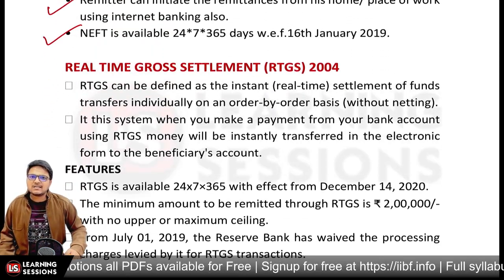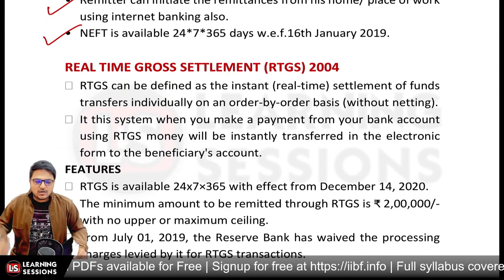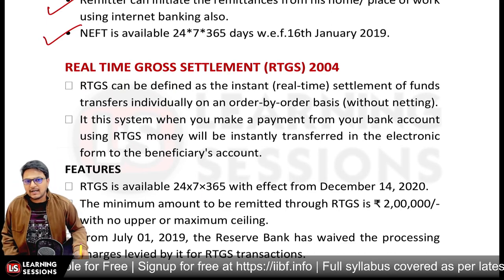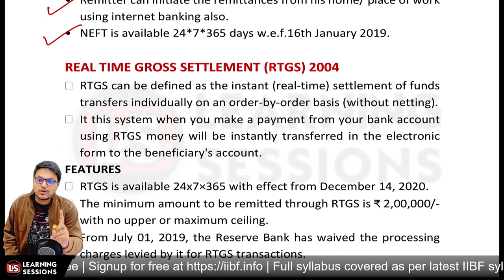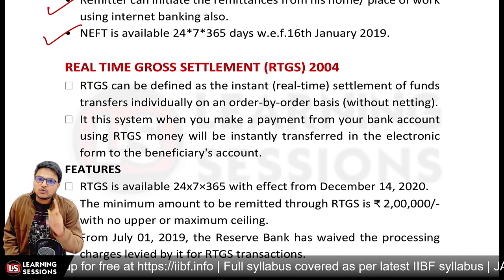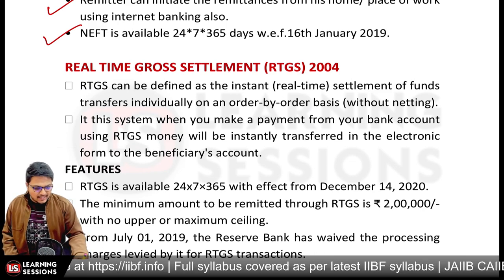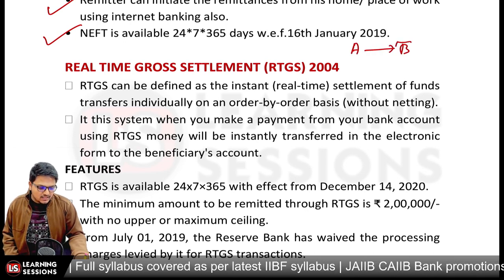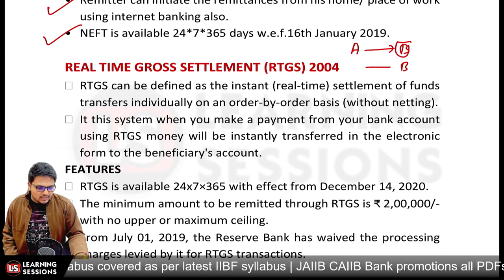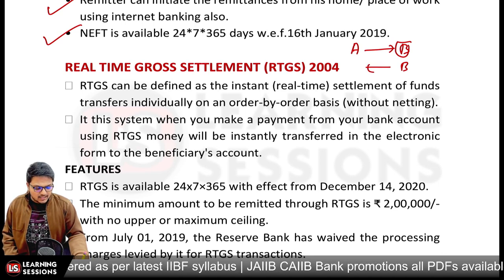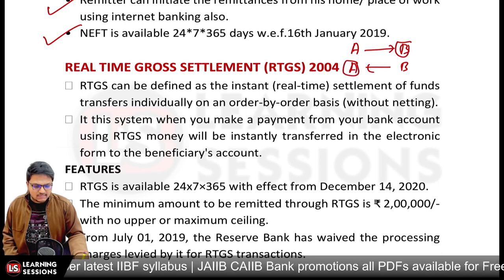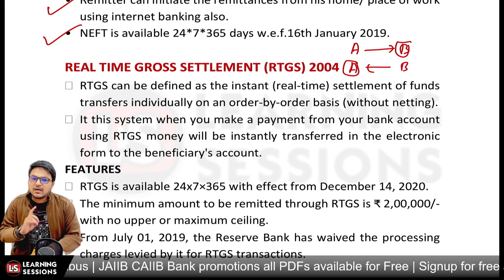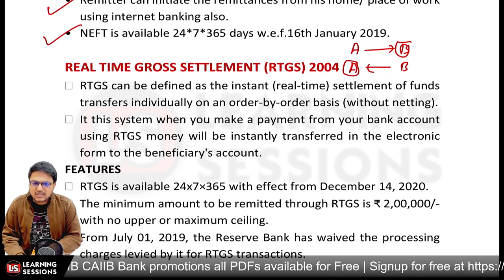The second system is RTGS — Real Time Gross Settlement. In NEFT there was netting of transactions, but in RTGS, one-to-one transactions are concluded. If A sends money to B, B receives it in real time. There is no batch system — there is instant settlement of money, which is why it is called real time gross settlement.